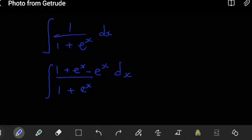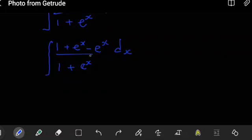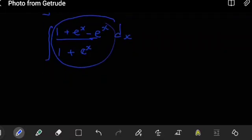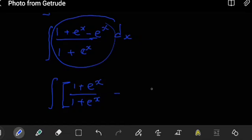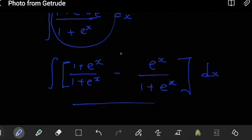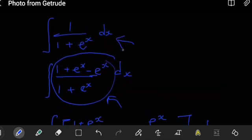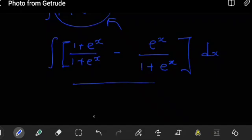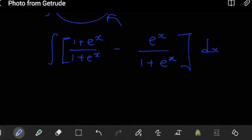Now having done that, we're going to write this into two separate expressions or fractions. In one part we're going to have 1 plus e to the x over 1 plus e to the x, then minus the second part, e to the x over 1 plus e to the x, then dx. You can easily combine these two, it will take you back and simplify to that expression, so this is okay.